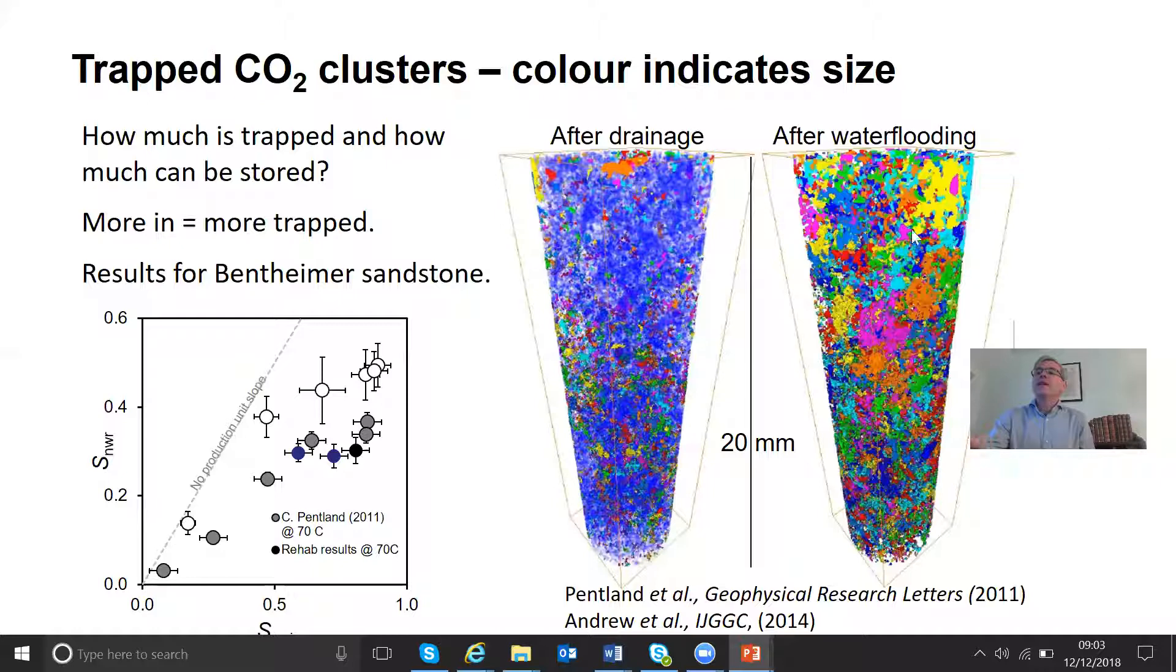Then you have water flooding. And what you see here is lots of different colored blobs. The colors now don't really mean much, but every single blob is trapped in the pores. And these occupy several pores. They're quite complex. But the CO2 is retained in the centers of the pores.